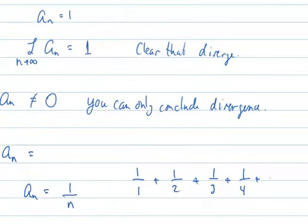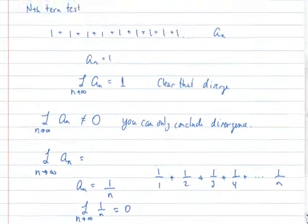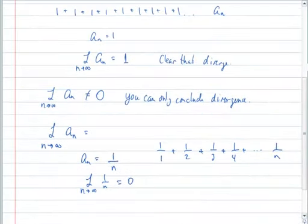And so on, and we'll eventually get out to 1 over n, that the limit as n goes to infinity of 1 over n will, in fact, be zero. So what this says is that since it went to zero, we just can't say that it diverges.